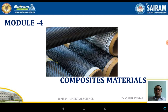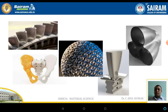Now we will discuss about module 4 - the composite materials. In this slide there are 5 different components. These components are all made up of either metallic or non-metallic materials.